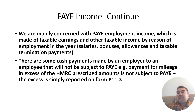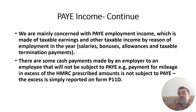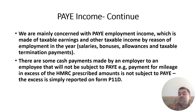We are mainly concerned with PAYE employment income, which is made up of taxable earnings and other taxable income by reason of employment — for example, salaries, bonuses, allowances and taxable termination pay. Some cash payments are not subject to PAYE. For instance, mileage reimbursed at the HMRC prescribed rate is not subject to PAYE. The prescribed rate is 45p per mile for the first 10,000 miles and 25p per mile beyond that. However, if the employer reimburses more than the prescribed rate, the excess is reported as a taxable benefit on PAYE.